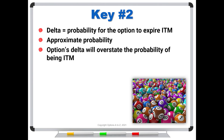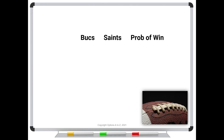A useful mnemonic to work through this is to think of it like a football game. Let's say we're rooting for the Bucks to win in an upcoming Bucks and Saints game. At the start of the game it's 0-0, and you have no prior belief that either team is favored. At this stage you might say, I'll give the Bucks a 50% chance of winning.